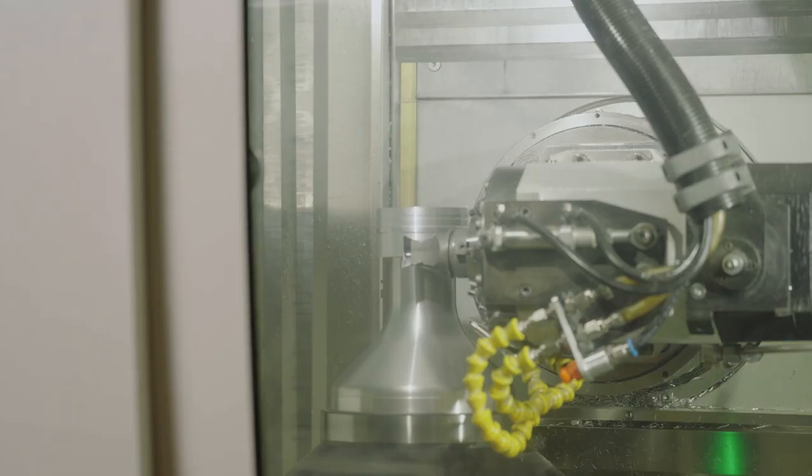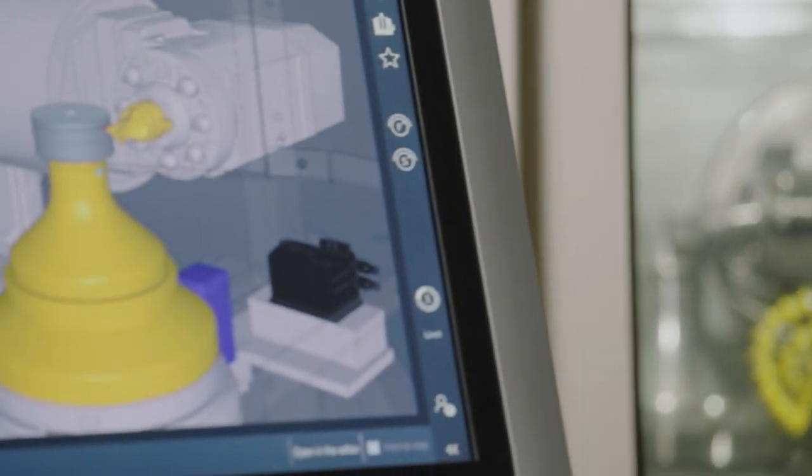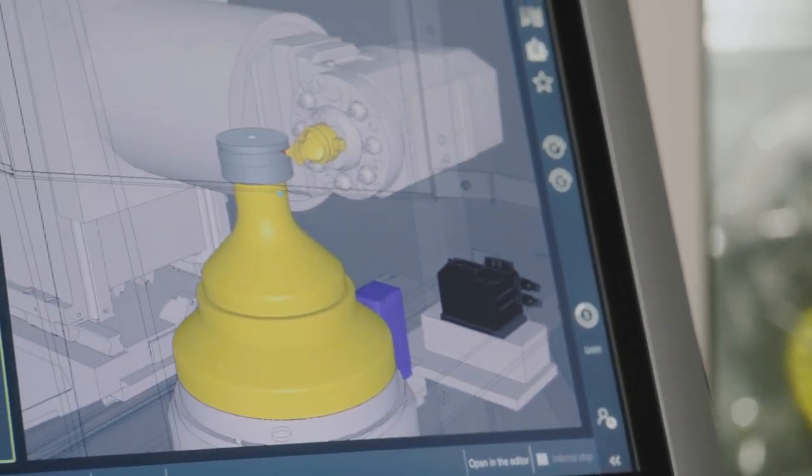As a unique selling point, the TNC controls offer the possibility of simultaneous roughing and finishing of turning contours. This means that the user no longer has to worry about the correct angles of inclination between tools and workpieces. He simply programs the contour of the workpiece blank and the finished part in the appropriate cycle.